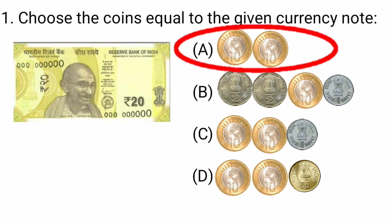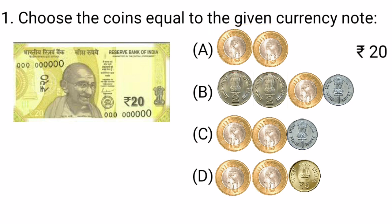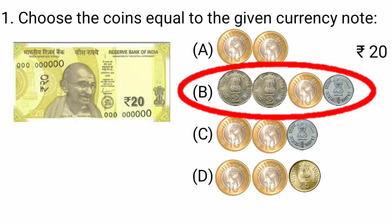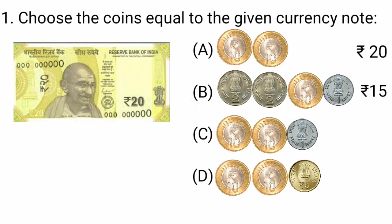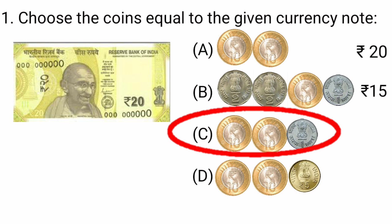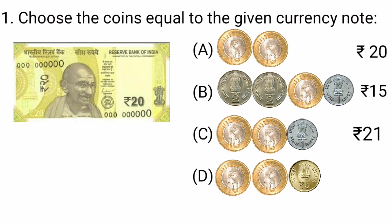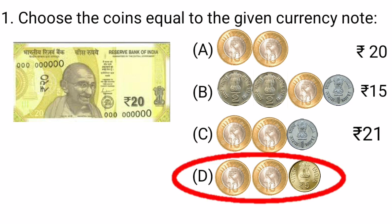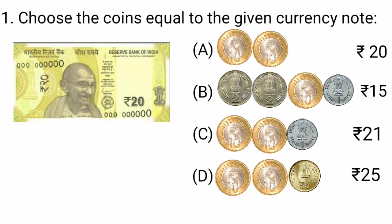In option A, 10 and 10 — 2 coins of 10 rupees each. The total is 20 rupees. In option B, 2 plus 2 is 4, 4 plus 10 is 14, and 14 plus 1 is equal to 15 rupees. In option C, 10 and 10 is equal to 20, and 20 plus 1 is equal to 21 rupees. In option D, 10 plus 10 is 20, and 20 and 5 more make 25 rupees. So option A is a set of coins of value 20 rupees, and we will put a tick mark at option A.